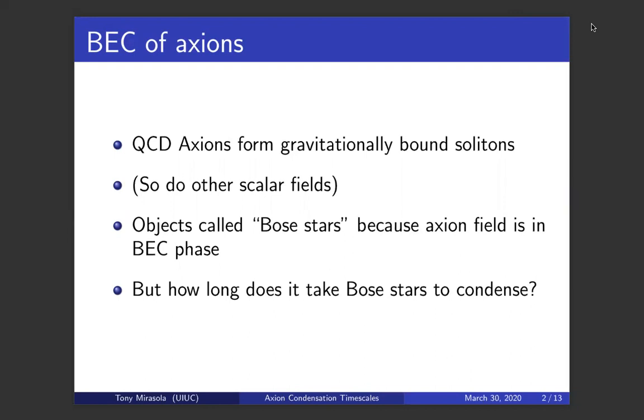We all know and love the axion because not only could they be a solution to the CP problem in quantum chromodynamics, and not only could they be the dark matter, but they also exhibit this phenomenon where they form compact gravitationally bound structures that are solitons. These objects are sometimes called Bose stars or boson stars, because the axion field is essentially in the Bose-Einstein condensate phase, where all of the axions are in the lowest energy modes.